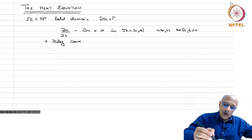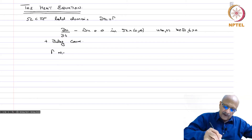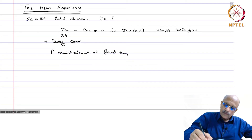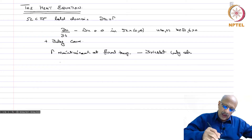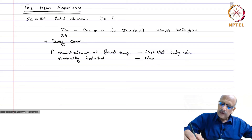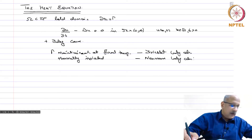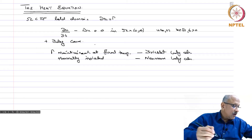The boundary conditions depend on the physical situation being considered. If gamma is maintained at a fixed temperature, then we have a Dirichlet boundary condition. And if gamma is thermally isolated with no heat exchange with the external environment, then we have a Neumann boundary condition. If the system receives heat from an external source, then the zero on the right-hand side of the equation will be replaced by an inhomogeneous term f(x,t) depending on the heat source.